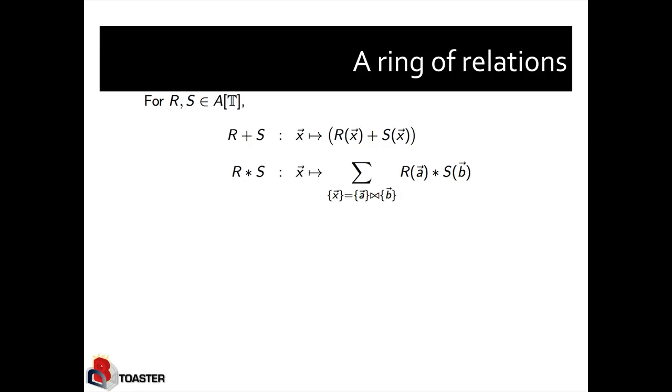So next we will define the operations plus and multiplication on such generalized multiset relations. So plus, conceptually, maps any tuple to the sum of the function values of the two relations R and S that we are adding on this tuple. Since any GMR is defined on all possible tuples, this is valid. Of course, if a tuple is conceptually not inside a relation, then the multiplicity is zero.